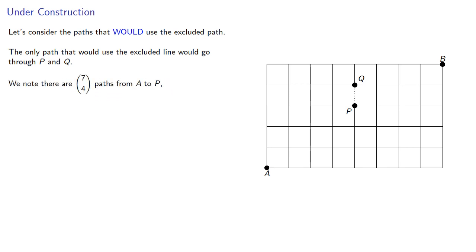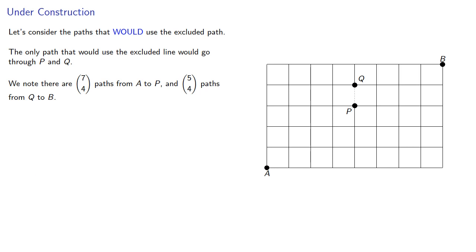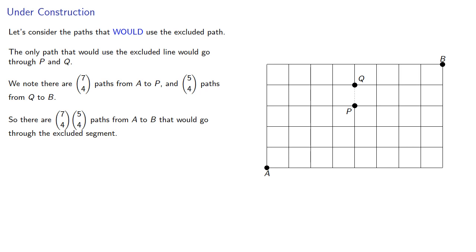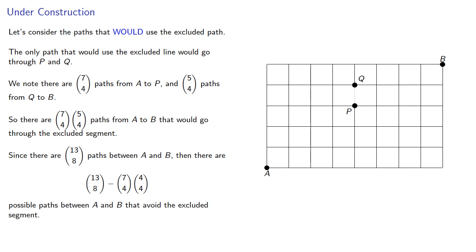We note there are seven choose four paths from A to P, and five choose four paths from Q to B, so there are that many product paths from A to B that go through the excluded segment. Since there are 13 choose eight paths between A and B, there are a certain number of possible paths between A and B that avoid the excluded segment.